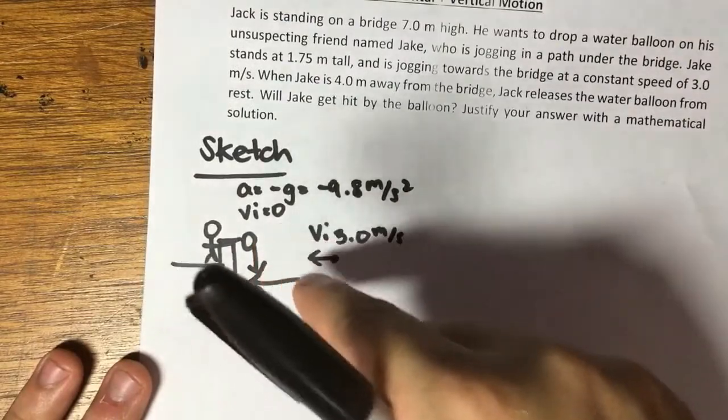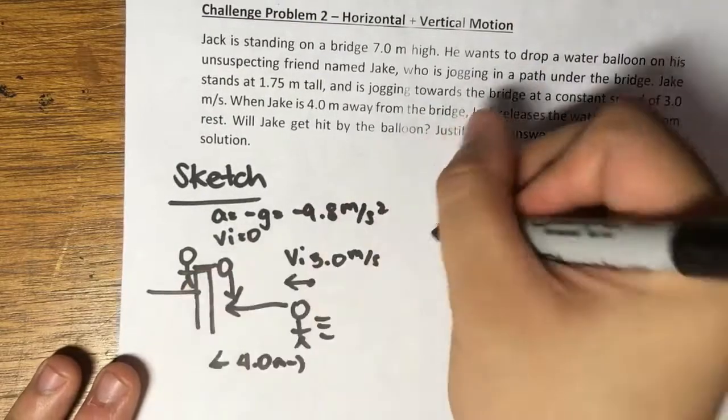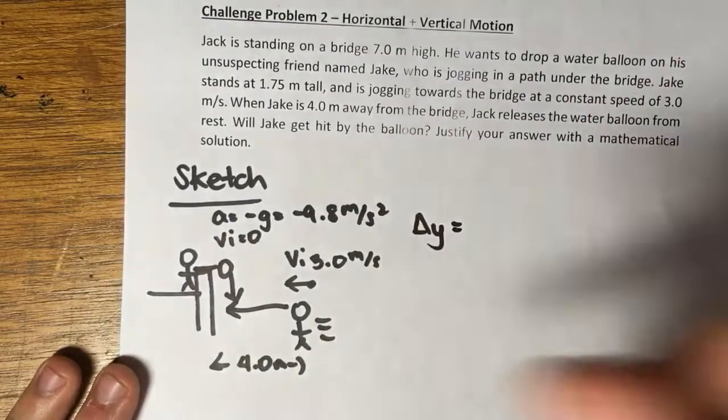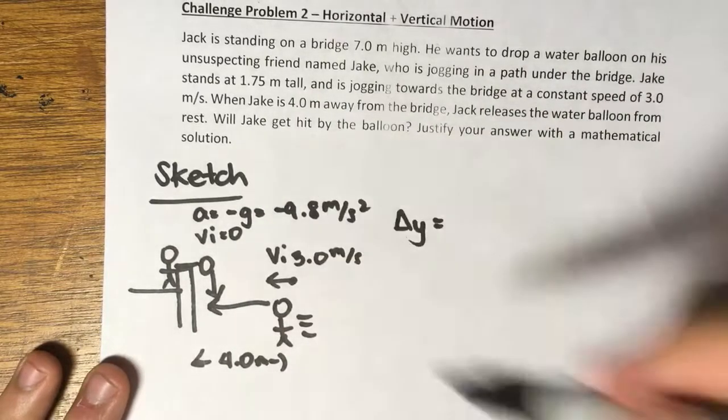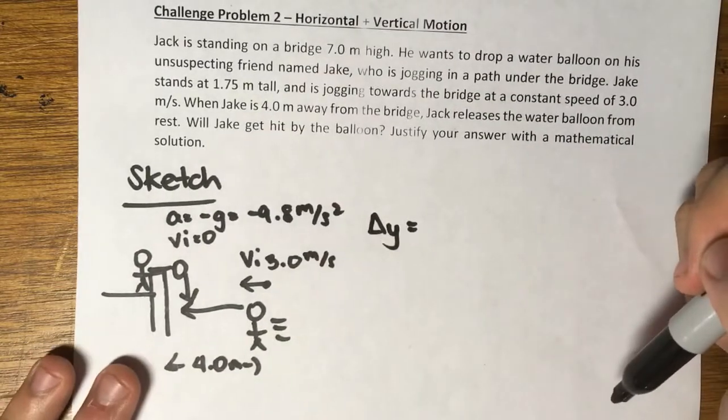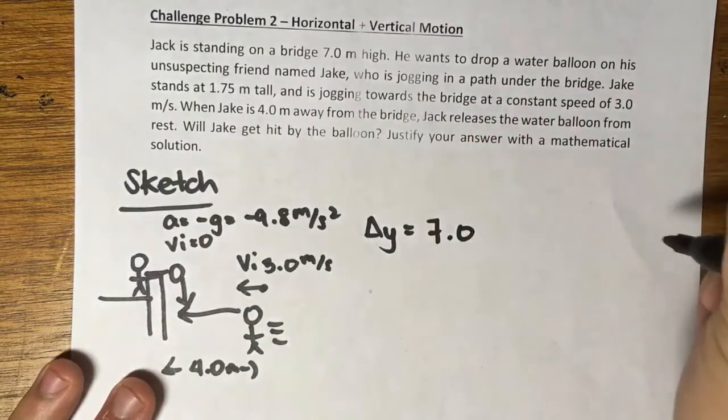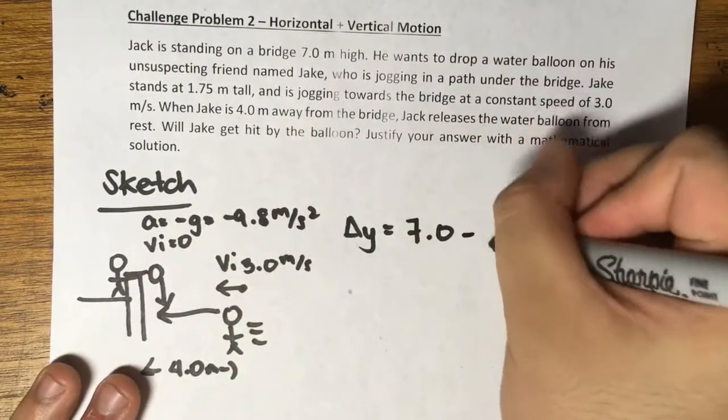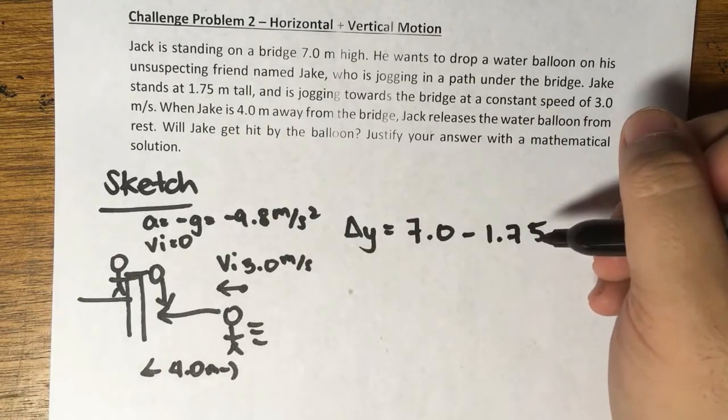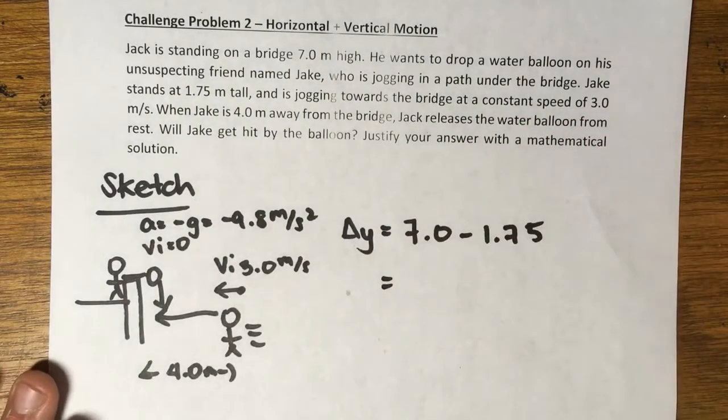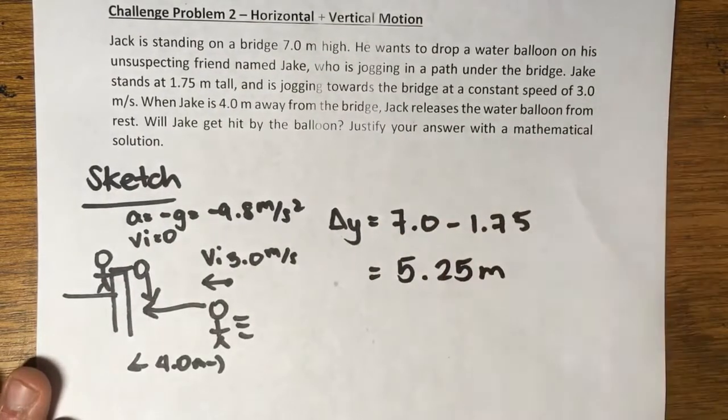Jack is going this way, Jake is going that way. The distance that the water bomb will travel, or delta y, is interesting because we know that the bridge is 7 meters high. However, we know that Jake stands 1.75 meters tall, so all in all delta y is the height of the bridge minus the height of Jake. Why? Because if the water bomb will hit Jake, it will hit him on the head, and that's at the very top of his height.